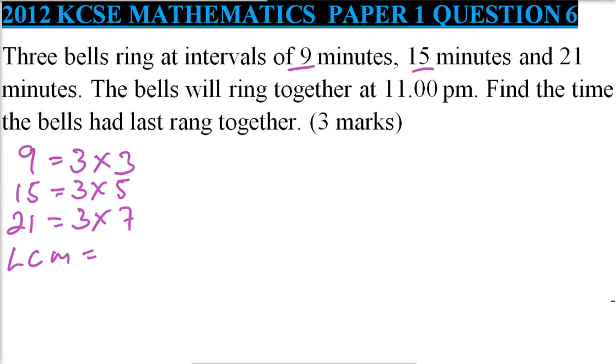To get the LCM, we take the prime factors with the highest index or power. So we have 3 squared multiplied by 5 times 7. When you multiply that, you get 315 minutes - that is the time they ring together.